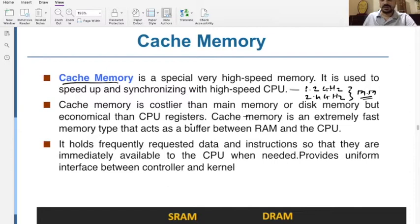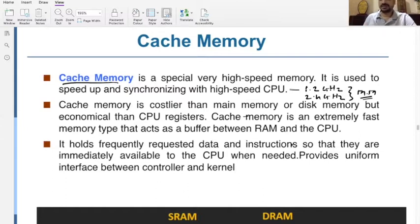Cache memory is an extremely fast memory type that acts as a buffer between RAM and the CPU. We have secondary memory, we have main memory, and we have CPU. The CPU interacts with the RAM, and RAM interacts with the secondary memory. But in between the RAM and the CPU, there is cache memory, which stores the data most recently used by the CPU so that the speed can be matched up with the CPU.